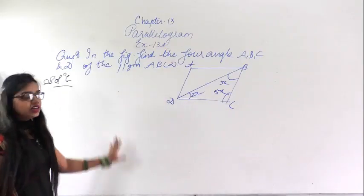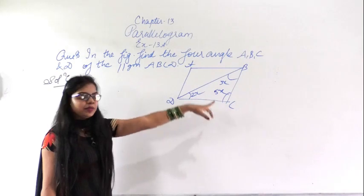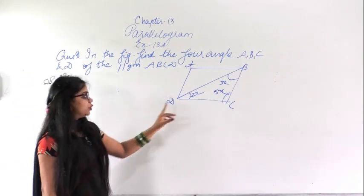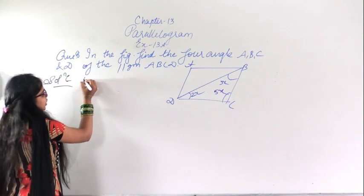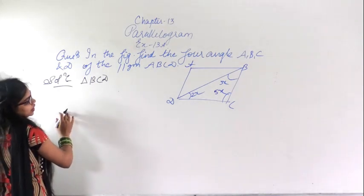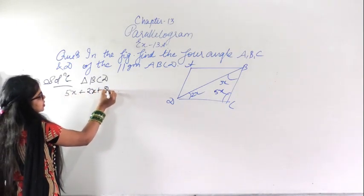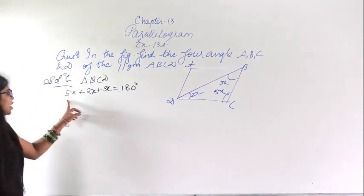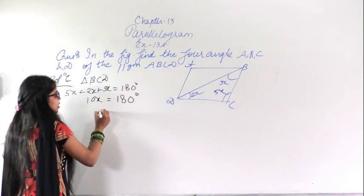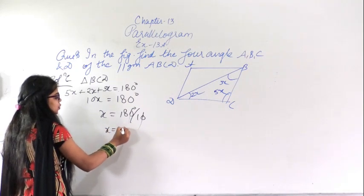This is question number 8. In this figure we have to find the four angles of parallelogram ABCD. We will take the angle sum in triangle BCD. The sum of angles in a triangle is 180 degrees, so 5x plus 2x plus 3x equals 180 degrees. That gives 10x equals 180 degrees, so x equals 18 degrees.